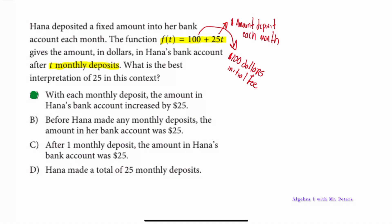Let's bubble in answer A. Choice B says before any monthly deposits the account was $25 — no, substituting t = 0 gives f(0) = 100, not 25. Choice C says after one monthly deposit the account was $25 — no, 25(1) + 100 = $125. Choice D says Hannah made 25 total deposits — the equation never tells us how many deposits she made, just that she adds $25 per month. Be mindful of what the equation actually represents.